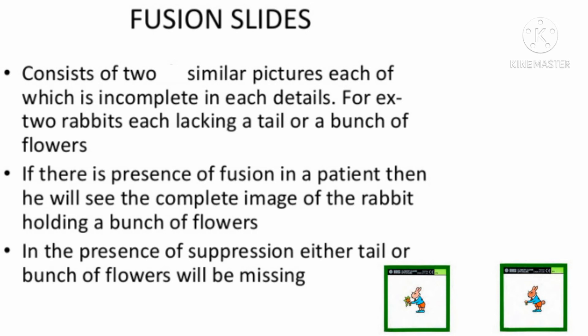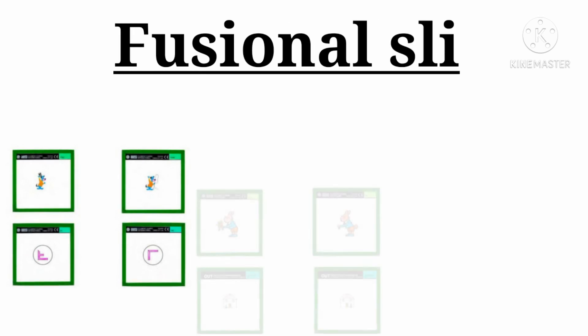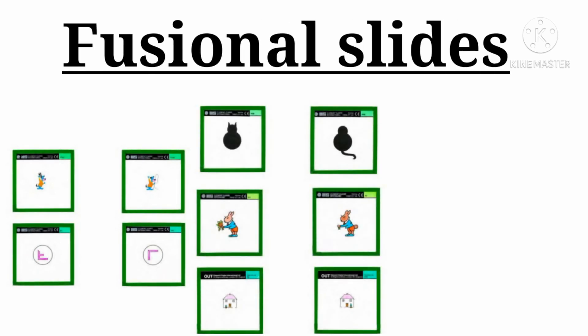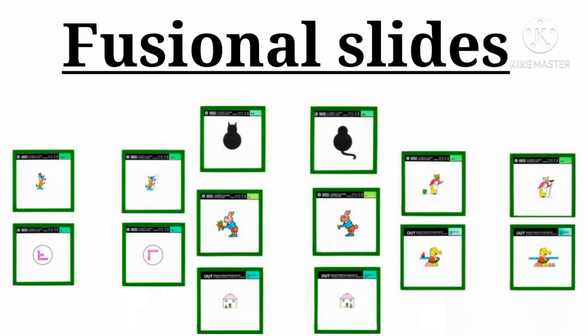So if the patient has fusional ability, the patient will see full rabbit holding the bunch of flowers and having tail. These are some of the fusional slides. Like one slide has a cat's ears and the other one has a tail. But with fusion's help, the patient will see the final image with both ears and tail.